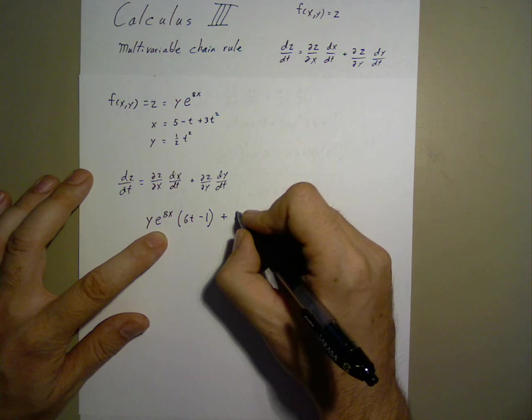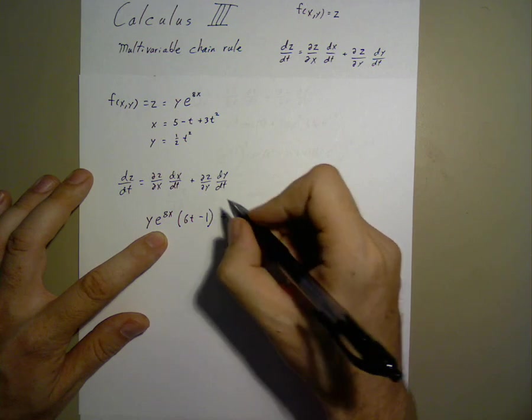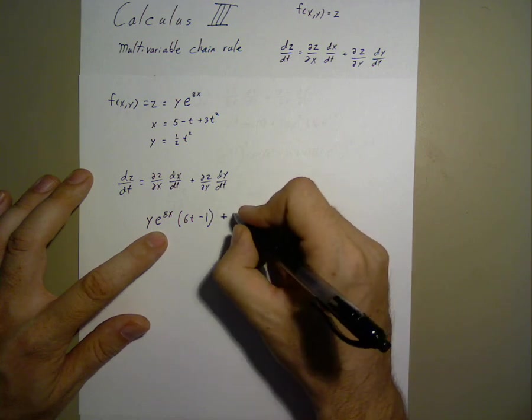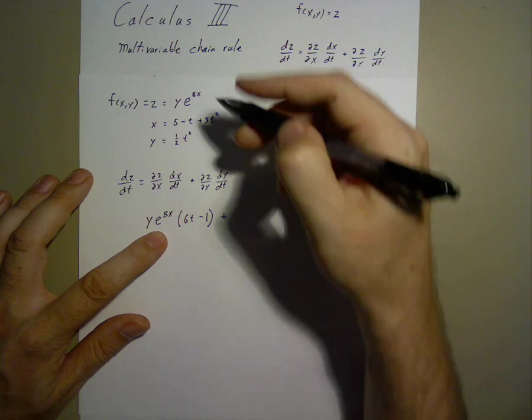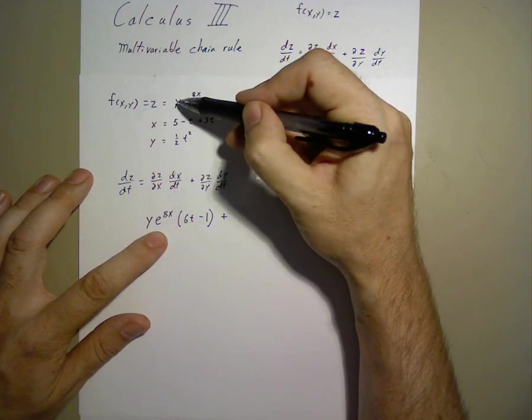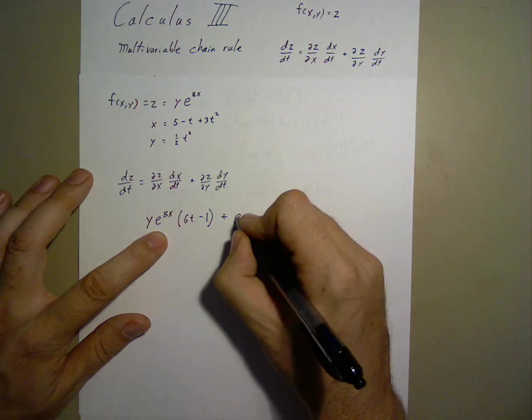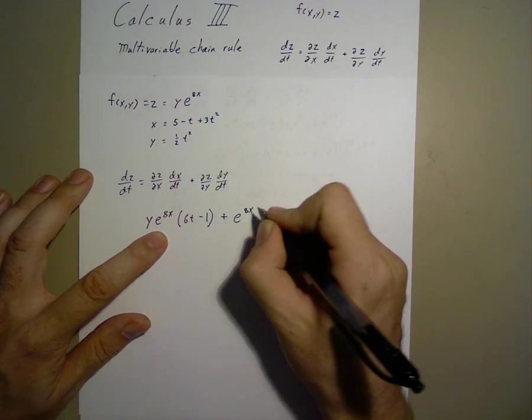Plus the partial y derivative of z, which means we treat x as a constant and take the derivative of y, which gives us e to the 8x.